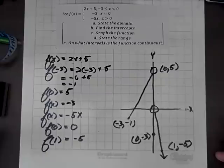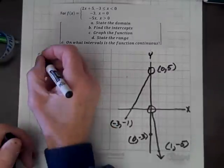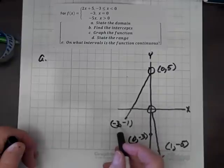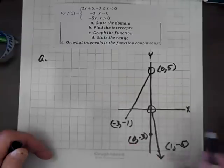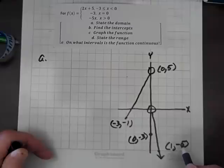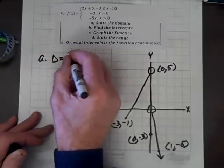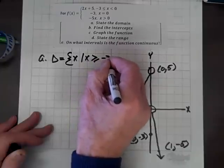As the graph goes, we're done with this portion of our analysis. Now we'll state part a: the domain of the function. The leftmost x-coordinate graphed is negative 3, and all x-coordinates to the right are on the graph. So the domain equals the set of x such that x is greater than or equal to negative 3.